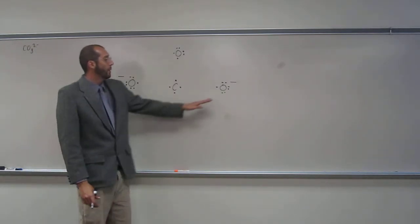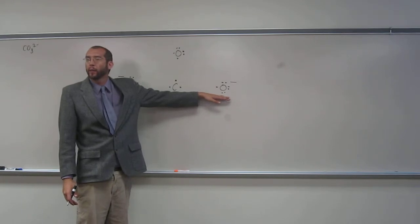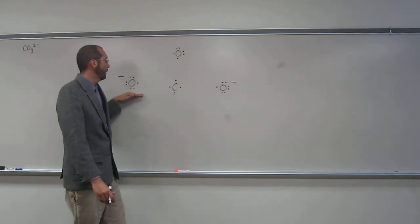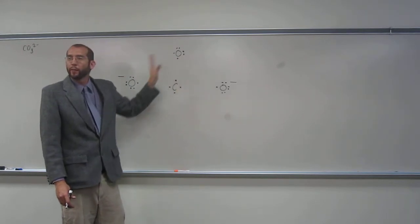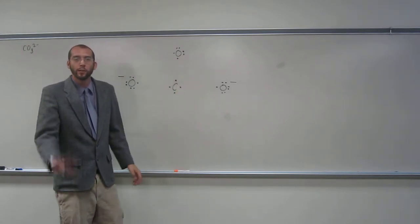So now, how many bonds can this oxygen make? One. This one? One. And this one? Two. And this guy? Four. So do we have enough bonds for everybody to go around? Yeah. So let's draw our structure.